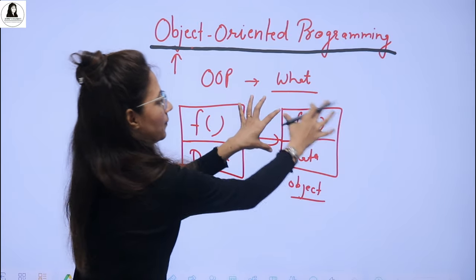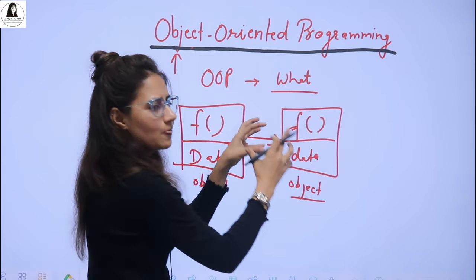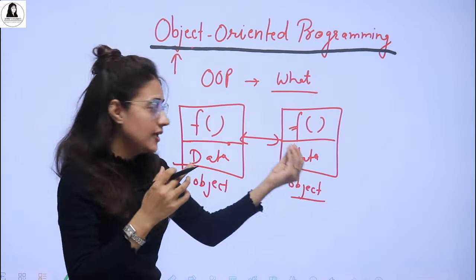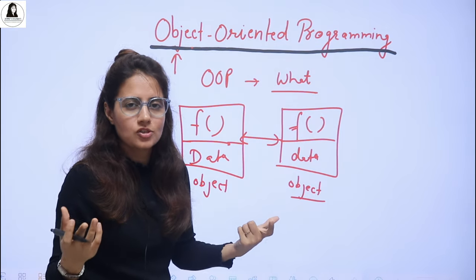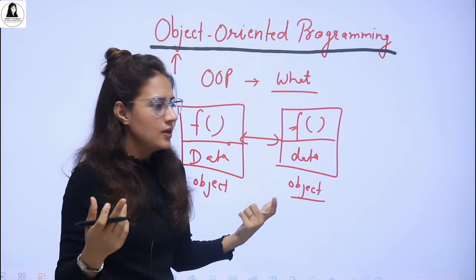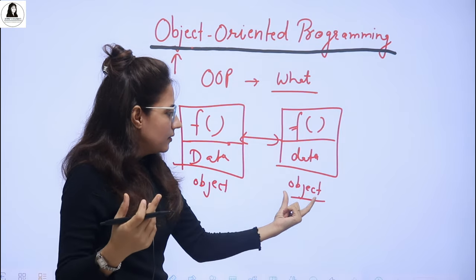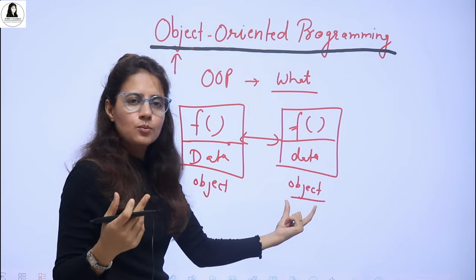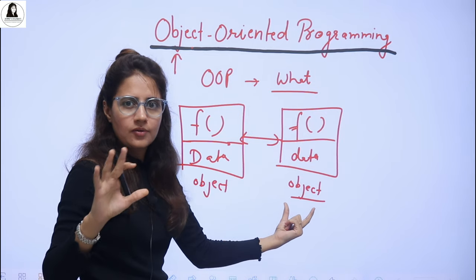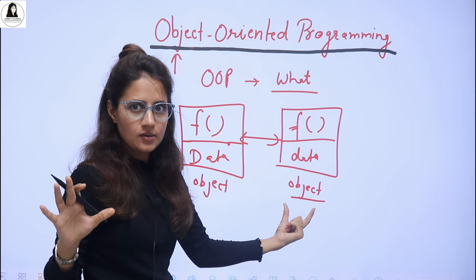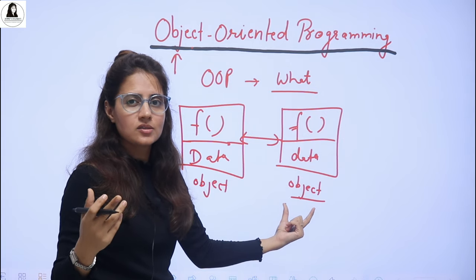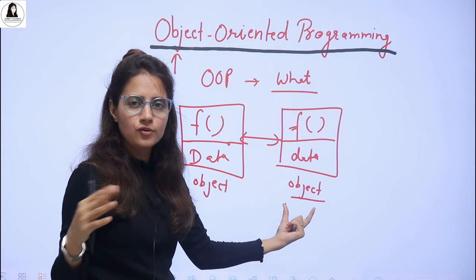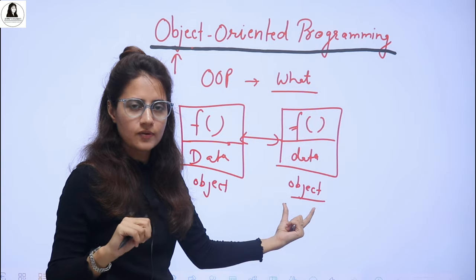This wrapping of functions and data within a single unit is basically known as encapsulation. And objects are nothing but real world entities. And classes — classes are simply a blueprint for these objects.